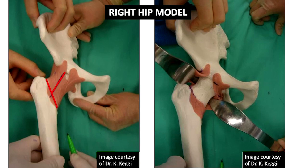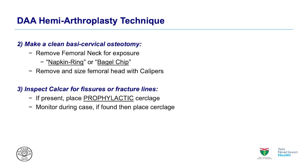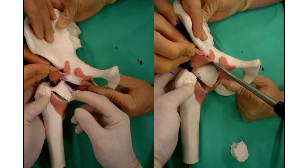This is what that looks like in cartoon or saw bones format — exposing the capsular limbs. Next I make the basic cervical osteotomy. I take the femoral neck ring out and remove and size the head. We inspect the calcar. If there are any fractures or fissures going down, we'll put a prophylactic wire. During the case you want to maintain a direct view of that proximal femur and place the cerclage wire.